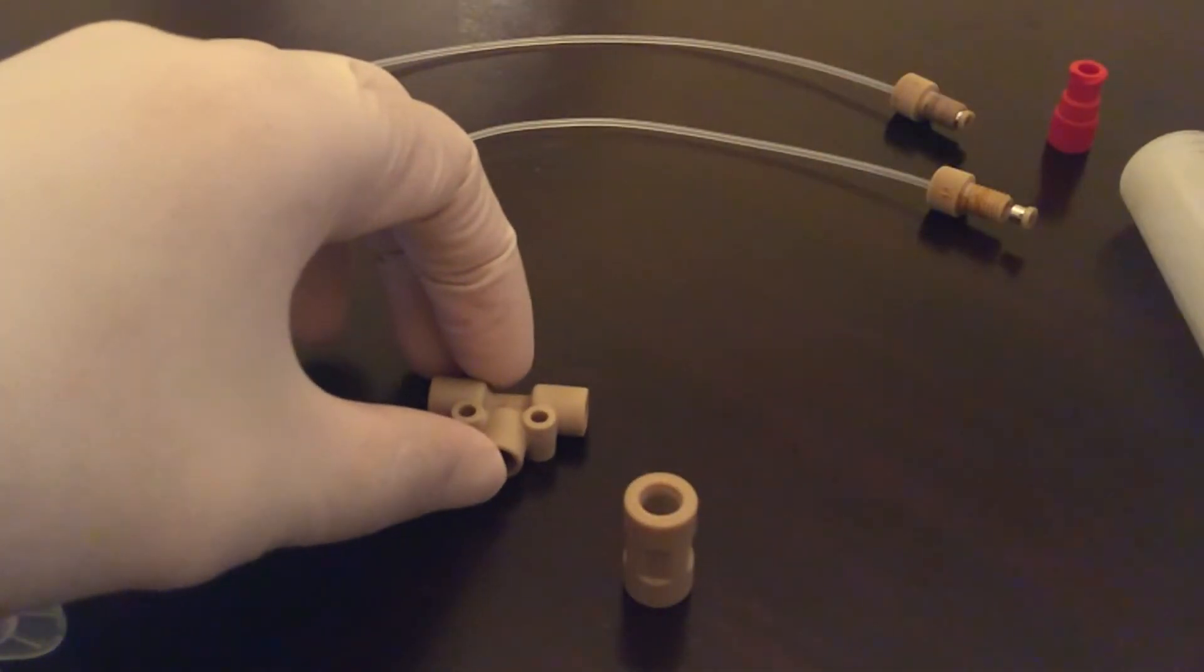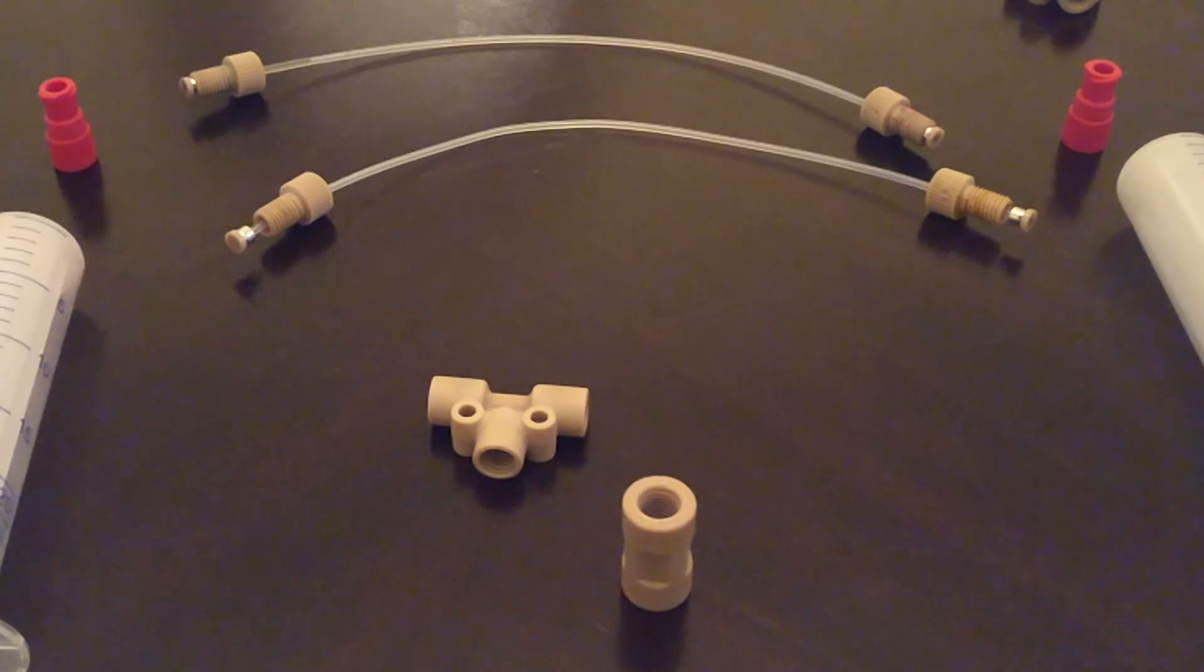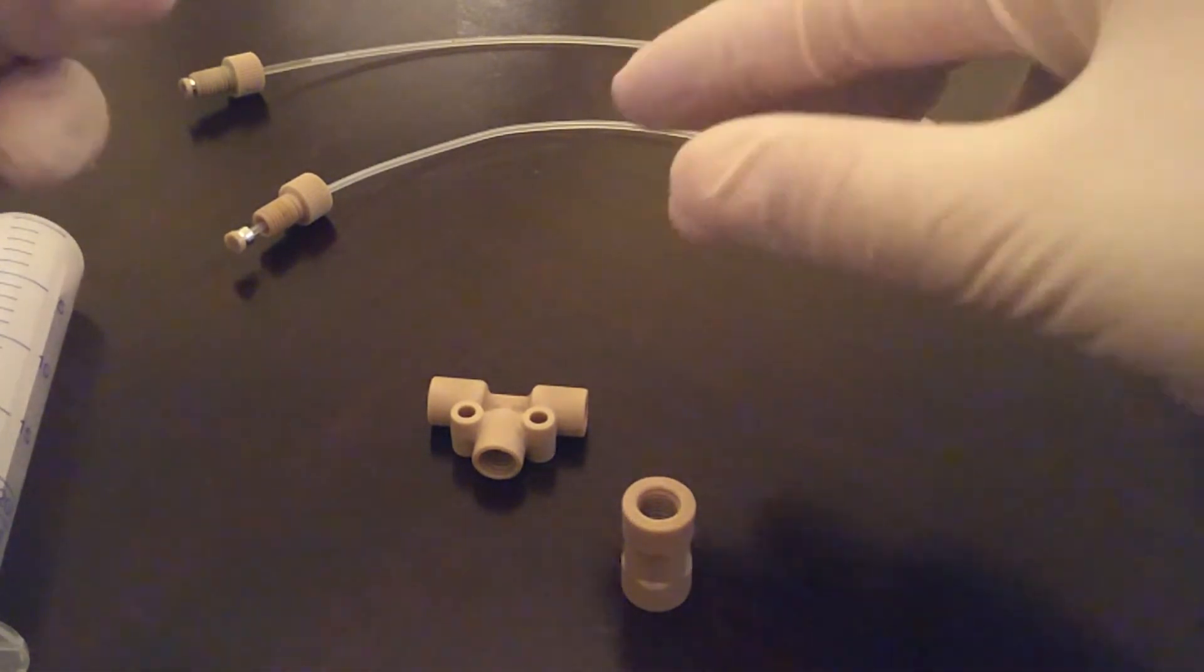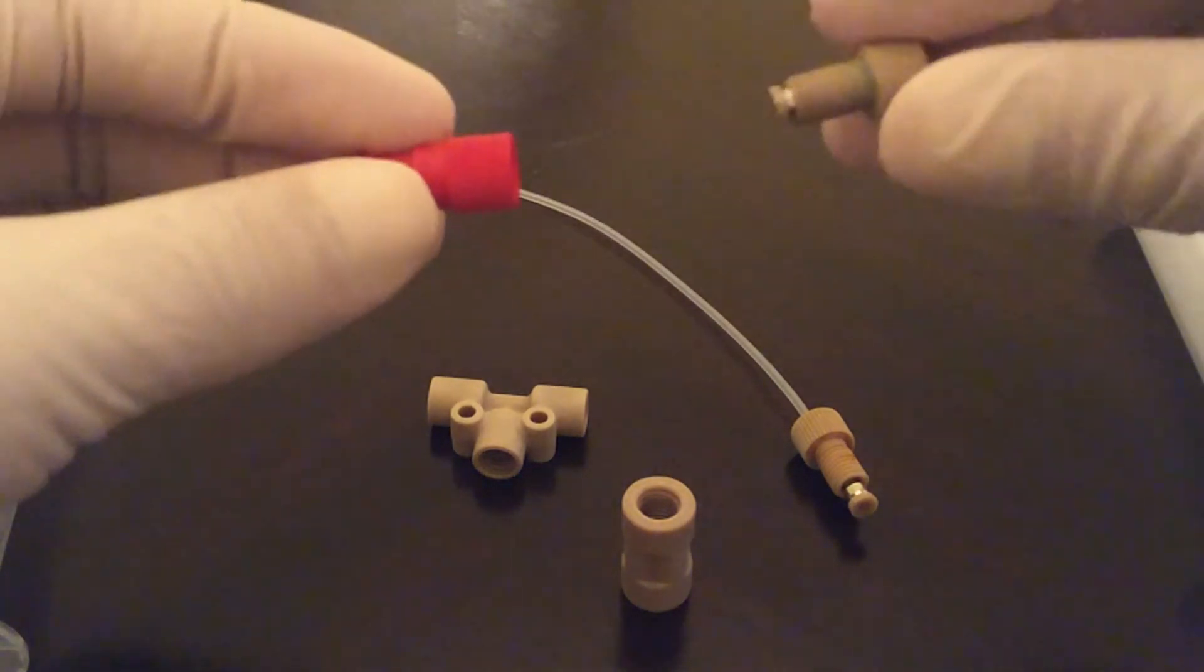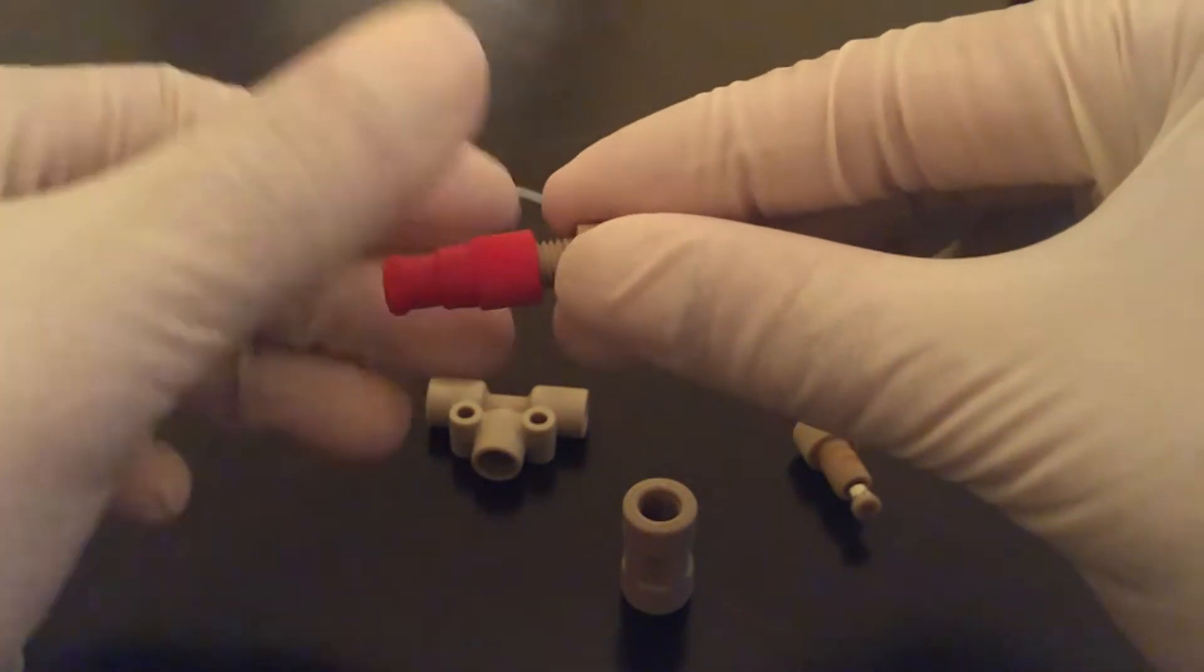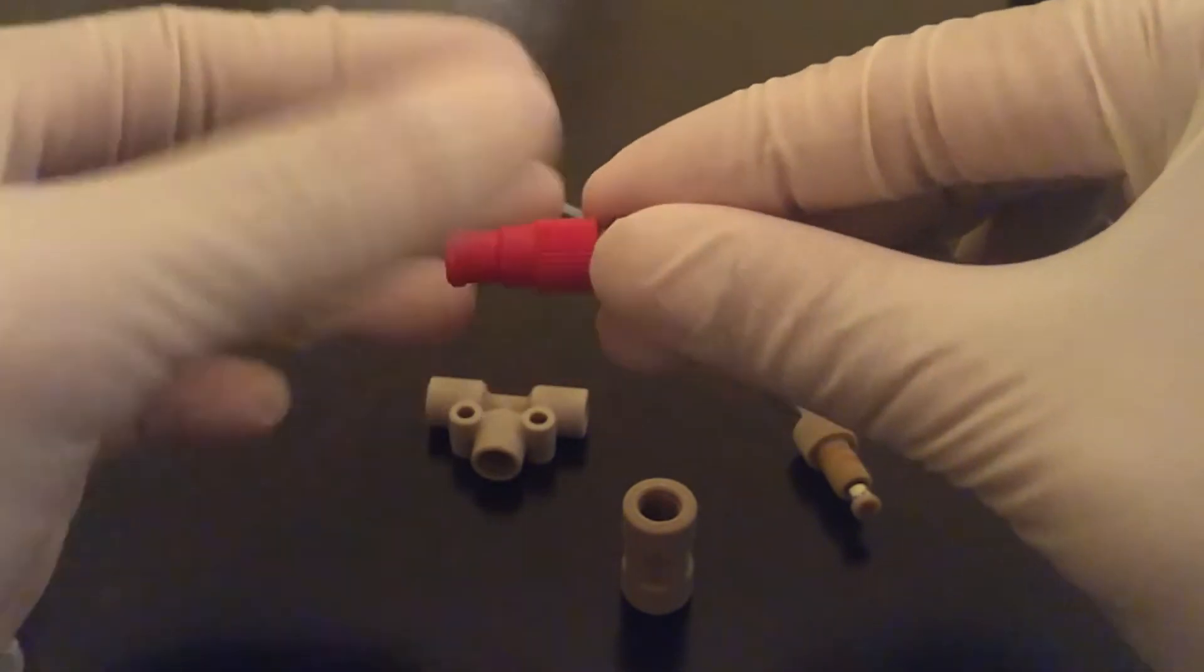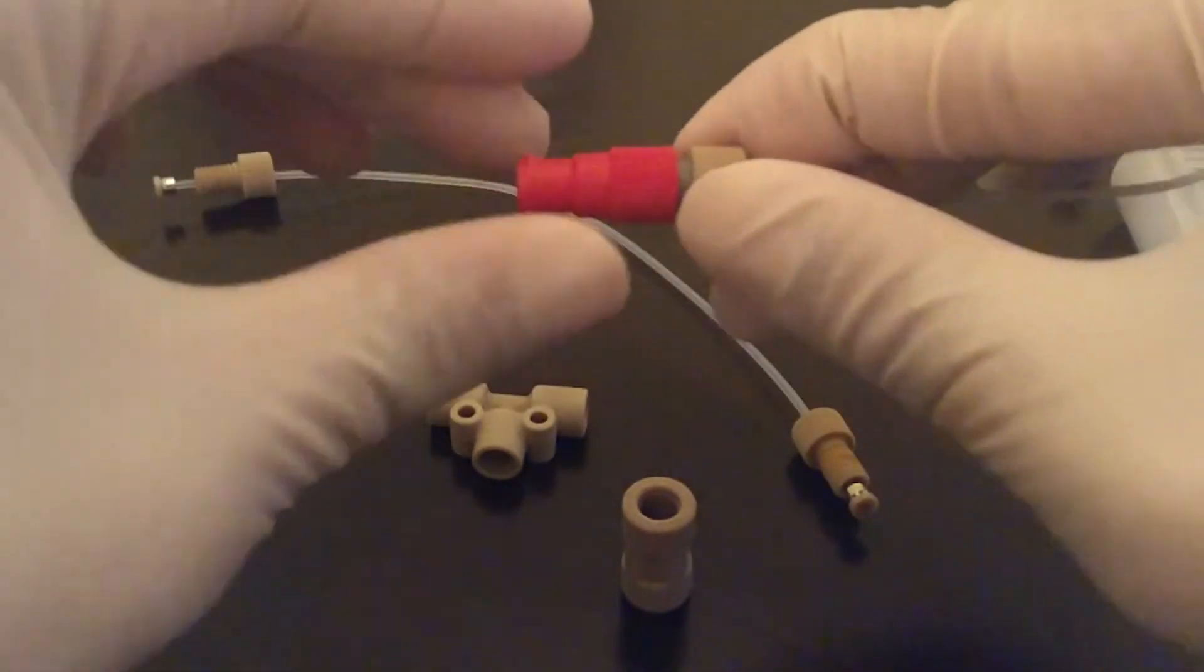We recommend using a connector that uses a Luer lock for syringe and screw system to link to the flow system. This will enable a very tight and strong connection. We recommend part P-678 red or P-628 colorless.